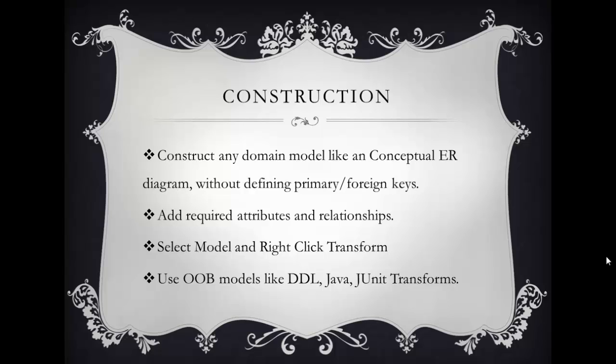To construct a domain model, it is similar to a conceptual ER diagram — we don't define primary or foreign keys. The main focus is to describe the system clearly, stating the different objects, defining all attributes clearly in a readable format, and providing associations and basic relationships. After that, you can transform it to a data model or class model, helping you select a database and transformation framework.